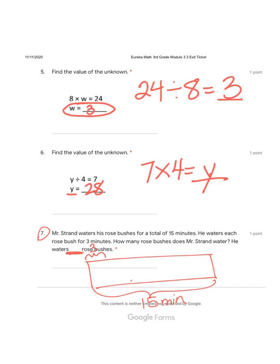So here's a bush, 3 minutes, 3 minutes. So let's count by 3's, 3, 6, 9, 12, 15. All right, so now we need to figure out how many bushes does he water?